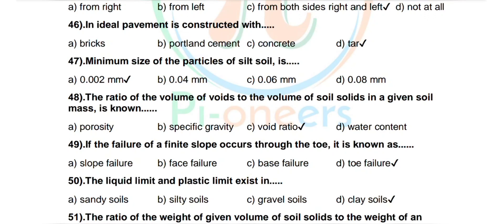Question 48: The ratio of the volume of voids to the volume of soil solids in a given soil mass is known as — options: porosity, specific gravity, void ratio, water content. Correct answer: void ratio.